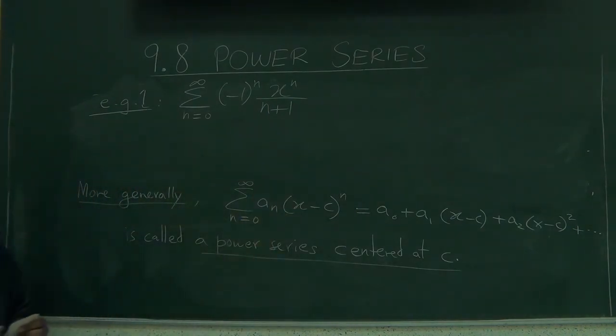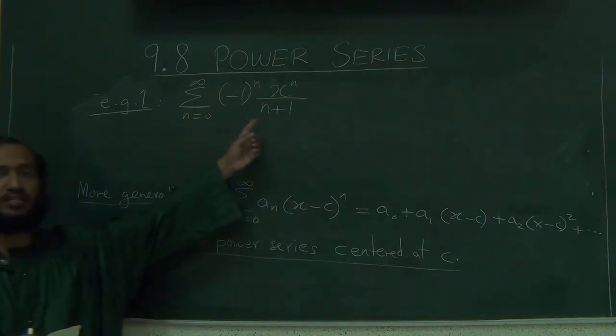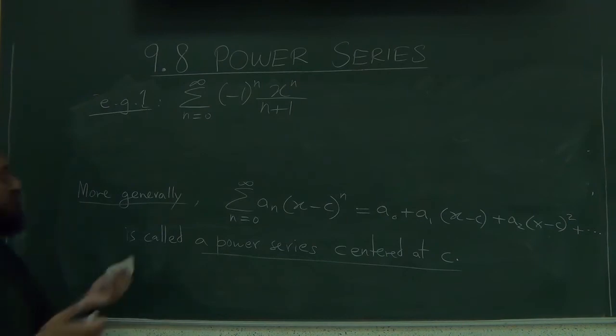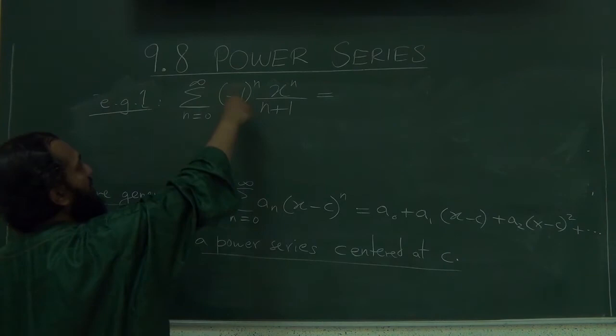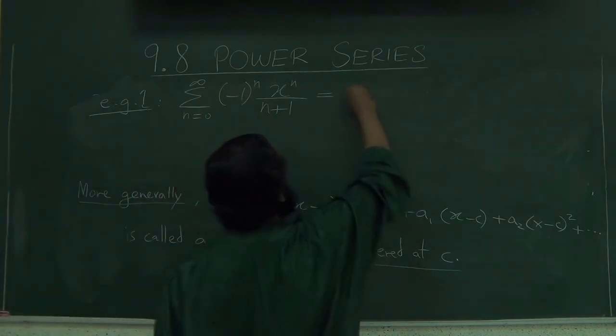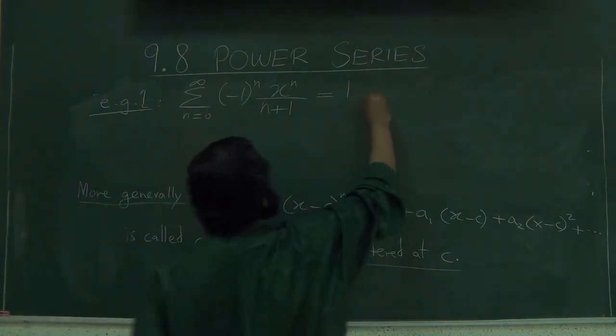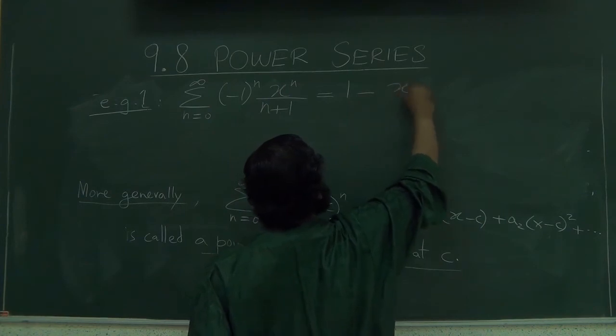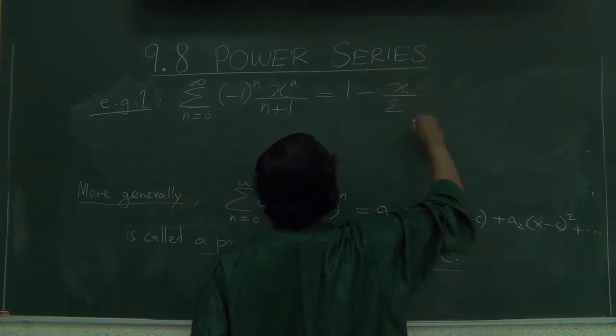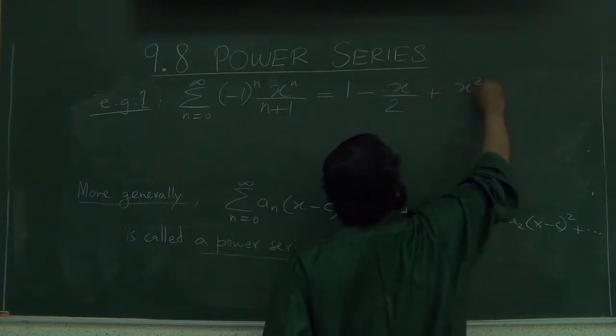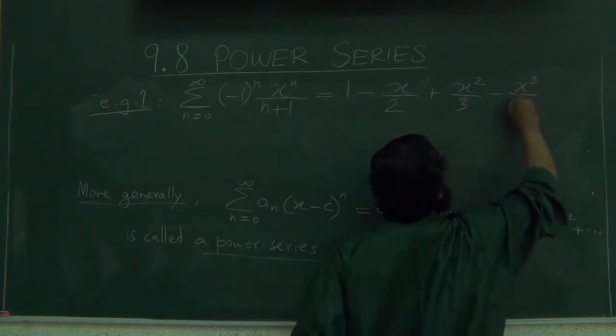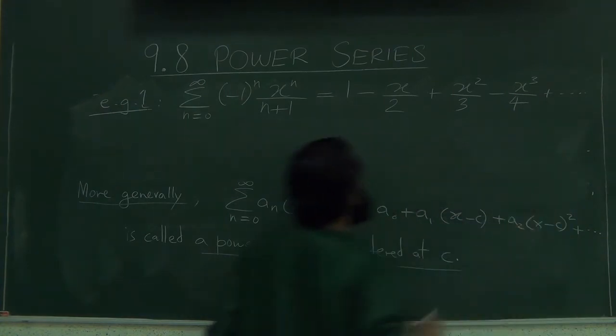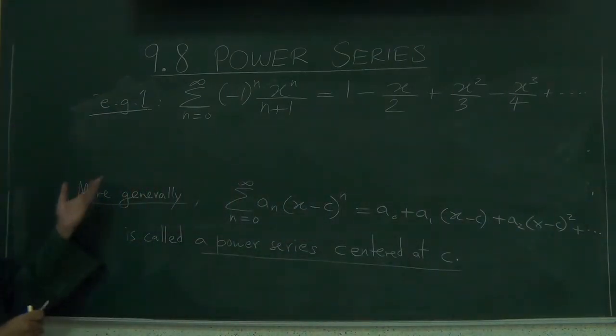So this is an example of a power series. It's centered at 0. Just for the sake of understanding, let's write down a few terms. When n is 0 this is 1, when n is 1 this is minus x over 2, plus x squared over 3 minus x cubed over 4 and so on. So here's the power series, it's centered at 0.